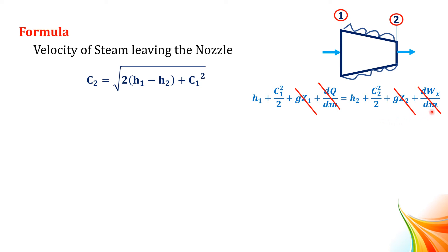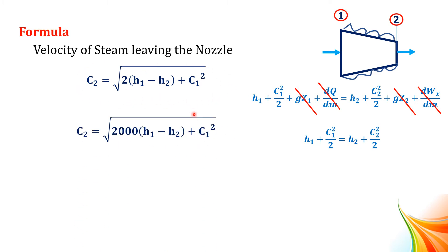After neglecting all these terms, the equation reduces to H1 plus C1²/2 equal to H2 plus C2²/2. From this, the velocity equation is rewritten as C2 equal to square root of 2000 into (H1 minus H2) plus C1 squared.